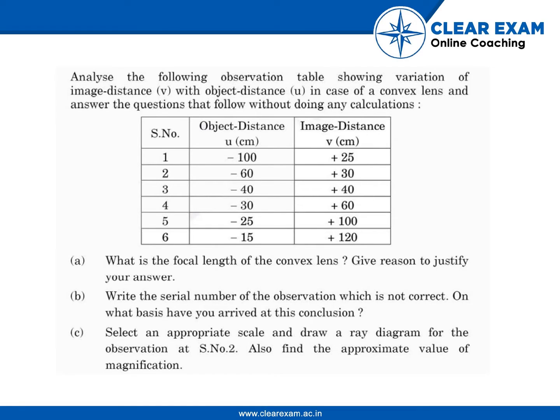The question is: analyze the following observation table showing variation of image distance v with object distance u in case of a convex lens, and answer the questions that follow without doing any calculations.